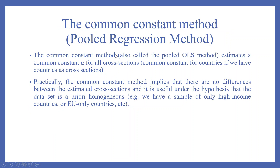The common constant method, also called the pooled OLS method, estimates a common constant alpha for all the cross-sections — for countries, if we have countries as a cross-section. Practically, the common constant method implies that there are no differences between the estimated cross-sections and it is useful under the hypothesis that the dataset is a priori homogeneous. For example, we have a sample of only high-income countries or European-only countries.